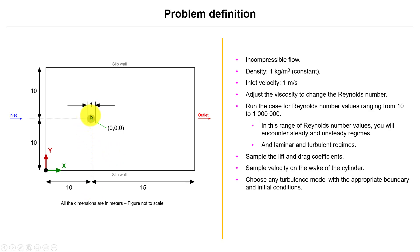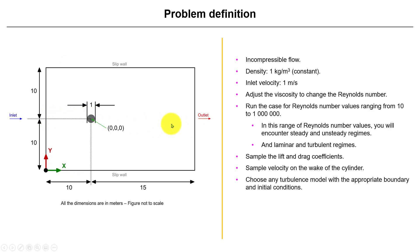Generally speaking, the guideline you should follow is that you shouldn't have strong gradients at the boundary. If we run this case you will see there are no strong velocity or pressure gradients at these walls. A characteristic length in this case will be the cylinder diameter, and you can go 10 times this length up, down, and in front. In the back part you can go from 15 to 20 times.